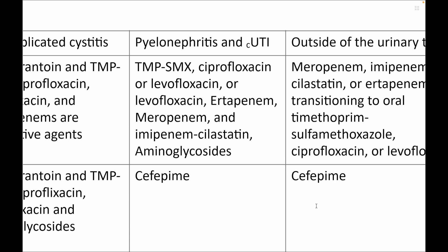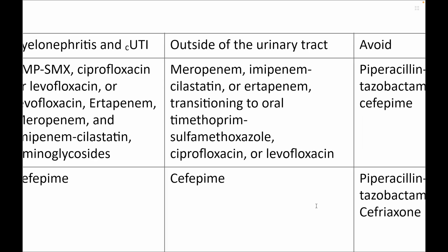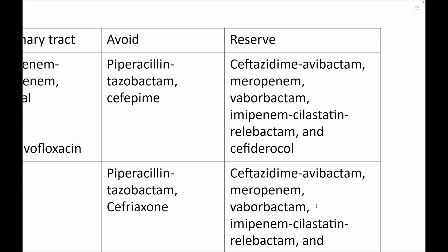You can also add carbapenems or aminoglycosides. If the infection is outside the UTI, you should go for meropenem, imipenem, or ertapenem. If the patient is critically ill, it is better to avoid ertapenem because albumin binding is affected. Avoid piperacillin-tazobactam and cefepime in these cases, as tazobactam does not adequately counteract ESBL. Ceftazidime-avibactam, meropenem-vaborbactam, imipenem-cilastatin-relebactam, and cefiderocol must be used only as reserve agents.